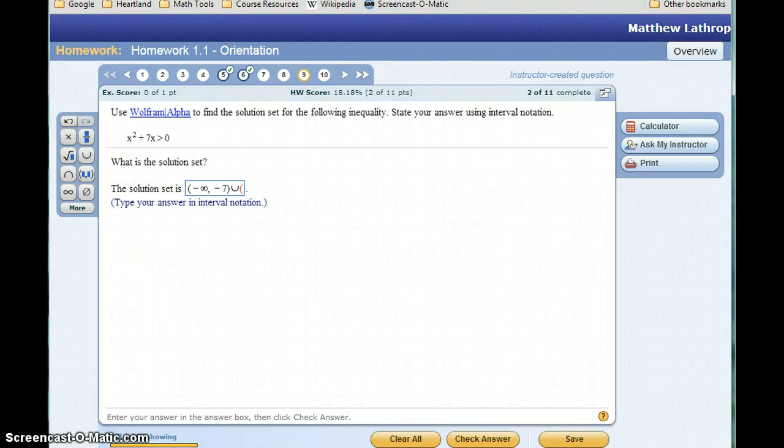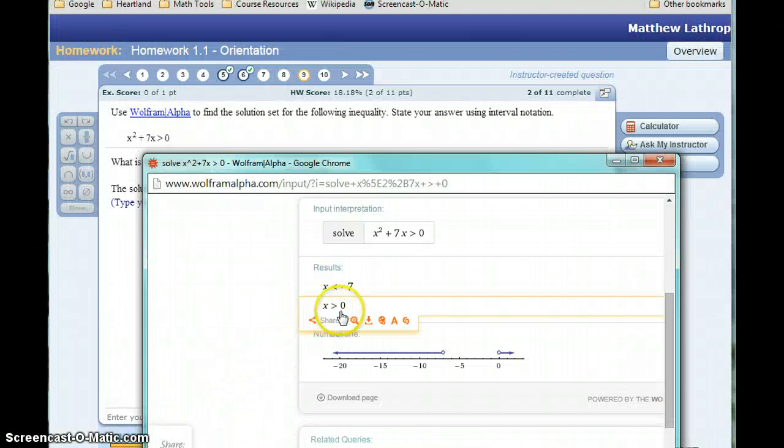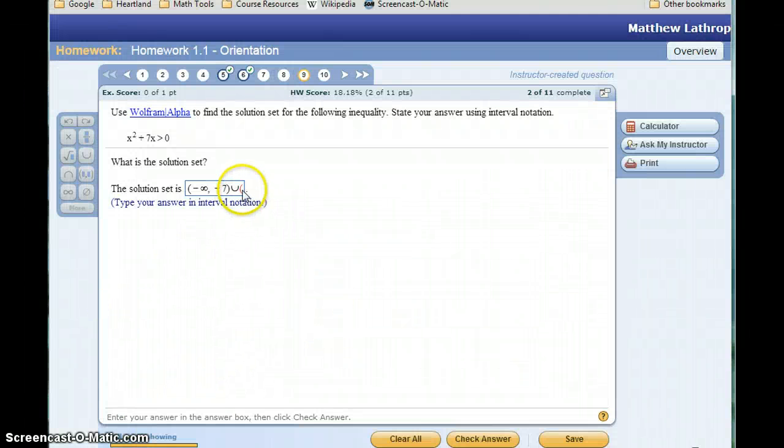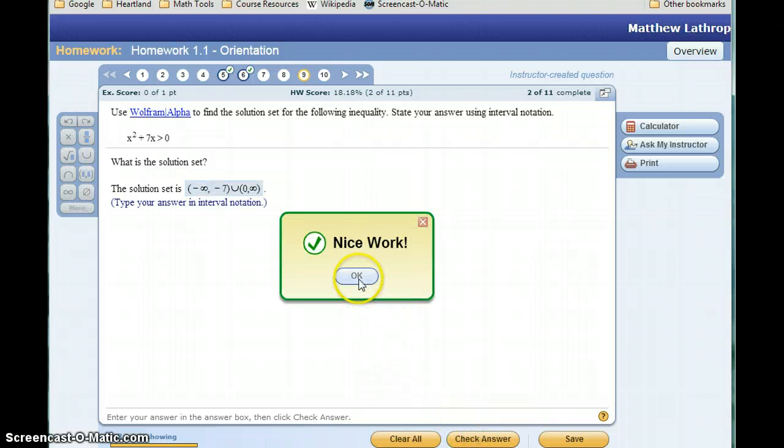We'll use this union symbol to join two intervals. Our second interval will be x greater than 0, so it will start at 0 and continue on to infinity. To do that work by hand isn't impossible, it would take a little bit of work to come up with that answer. But using WolframAlpha, we can jump right to that result.